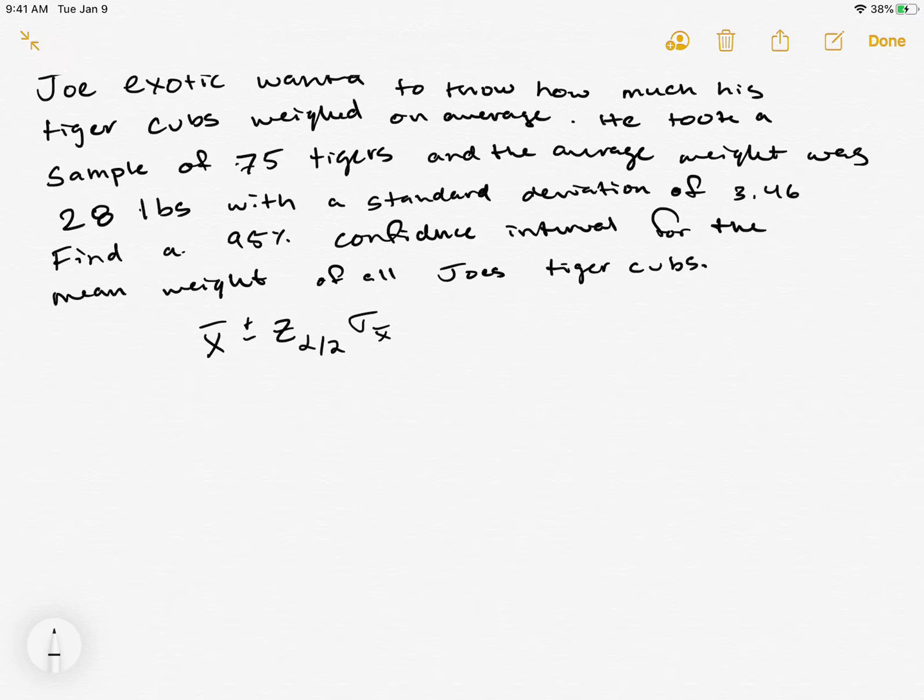We know we're going to use a z critical value because our sample size is more than 30. Depending on your class it might be 25 or 20, but we have a large enough sample size that we're going to be using a z critical value.